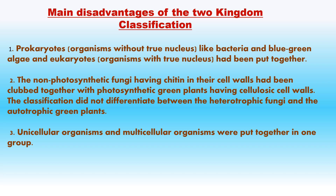A need was felt to include not only morphology but other features like cell structure, complexity, nature of cell wall, mode of nutrition, evolutionary relationships and methods of reproduction. Hence, the classification has undergone several changes over a period of time. Currently we are following a Five Kingdom classification.